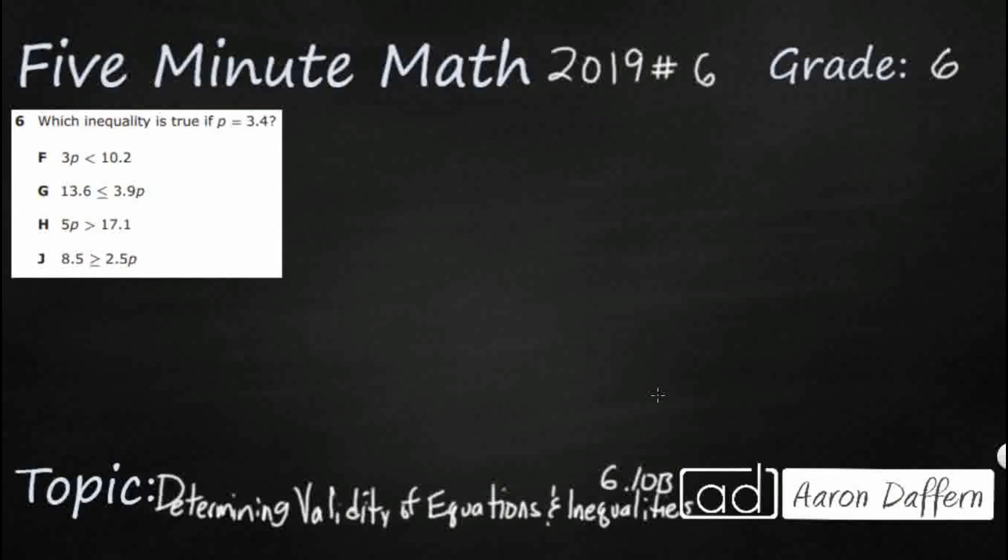So we have four different inequalities, and we need to see which one works when we make p equal to 3.4. There's two different methods that we could use to solve this. First we're going to use substitution. After that we will try isolating the variable, but many of us like substitution. Another way to call it is guess and check. We're just going to take each of these, we're going to start with F, and we're just going to substitute 3.4 wherever we see the variable p.